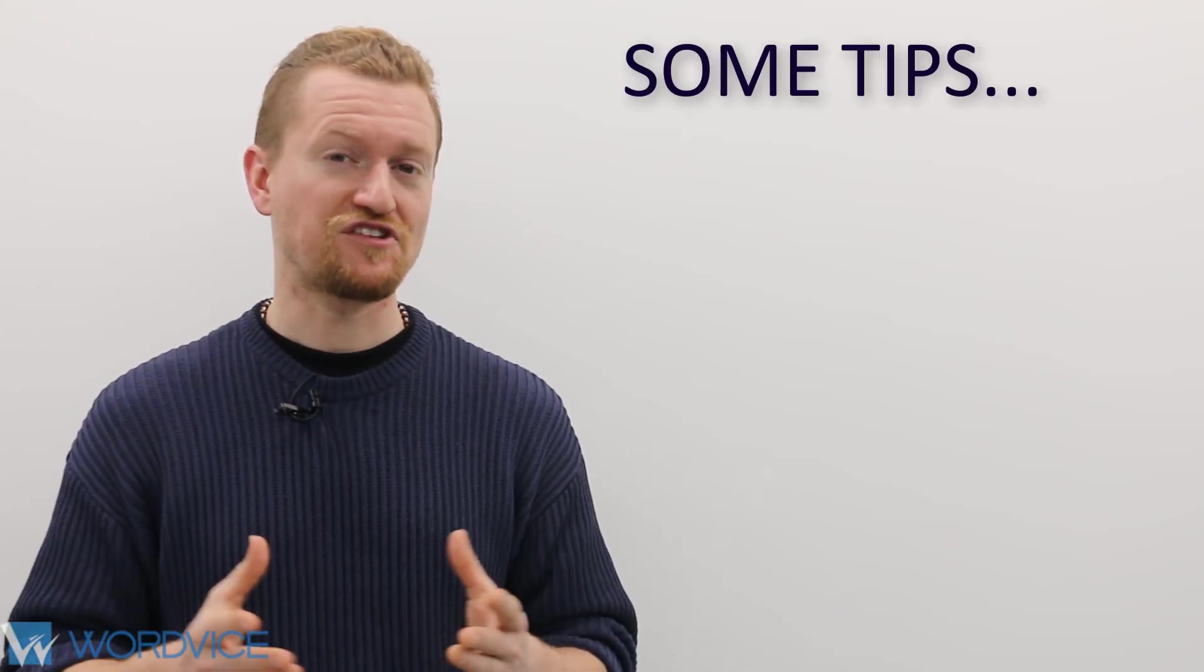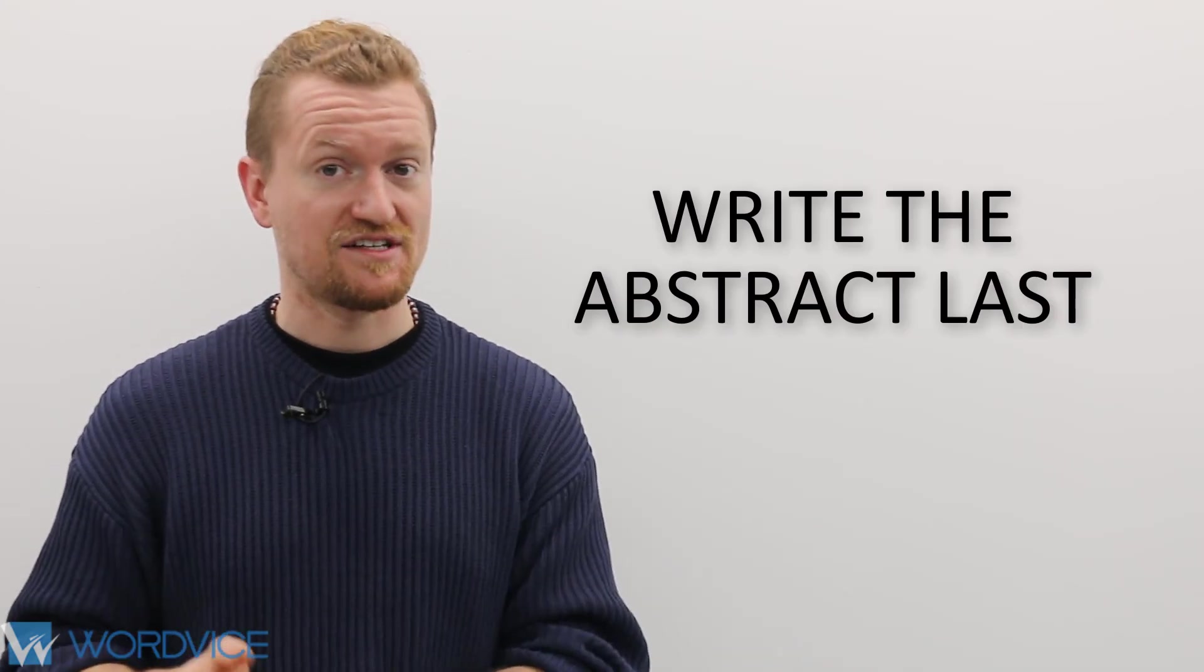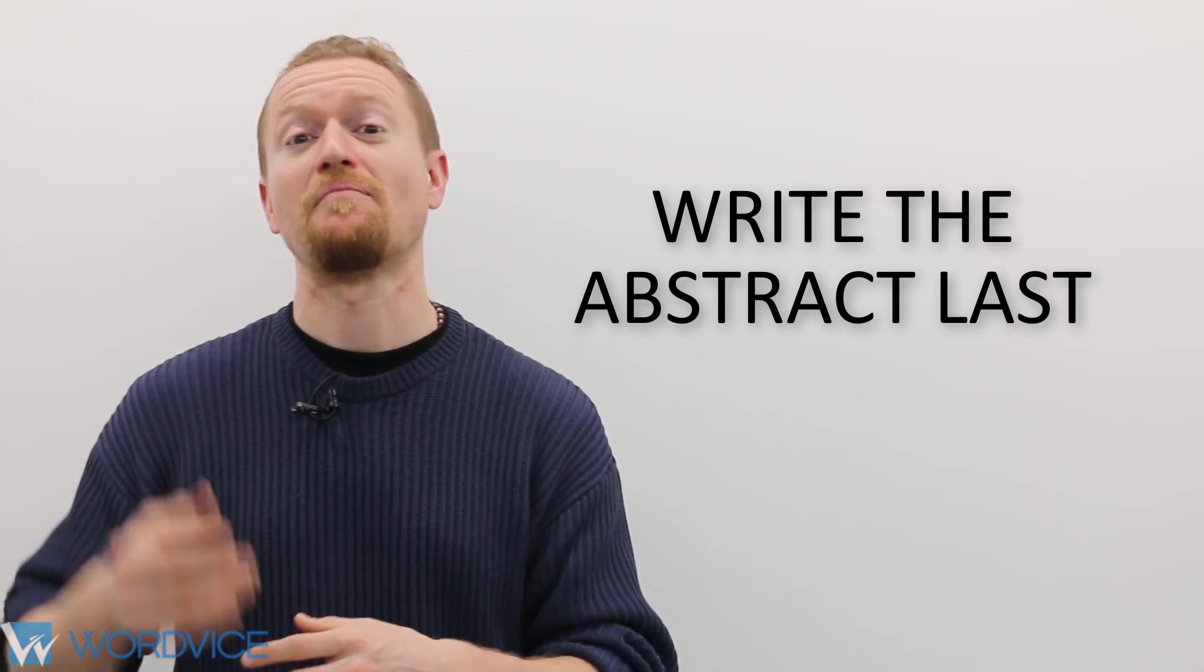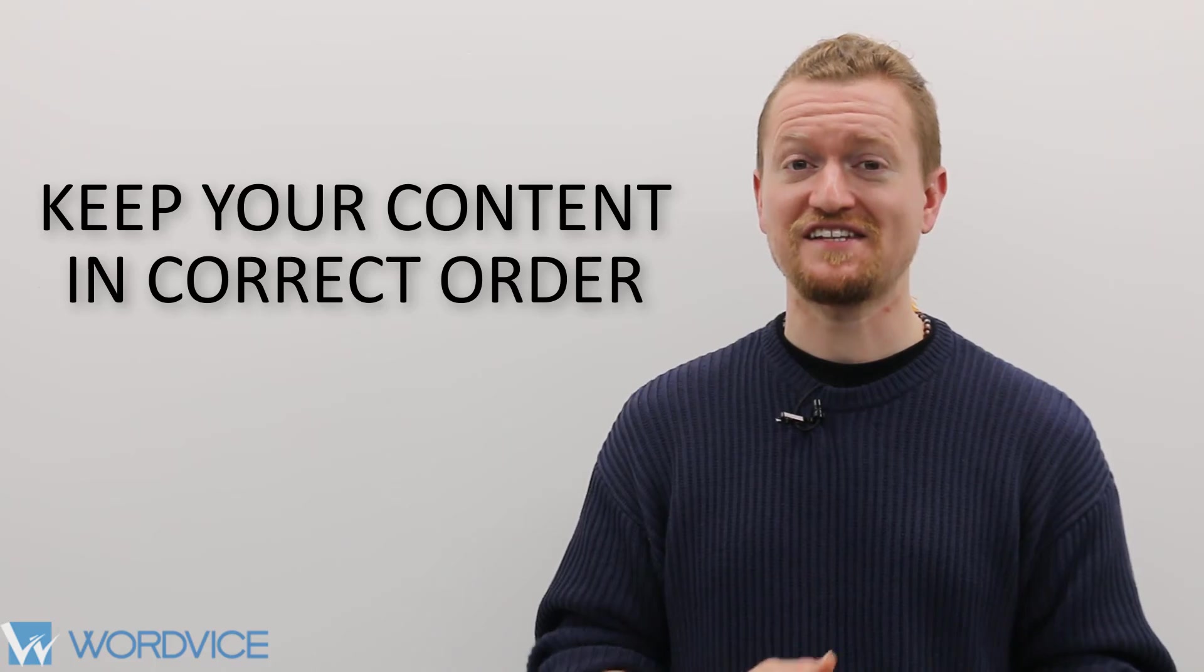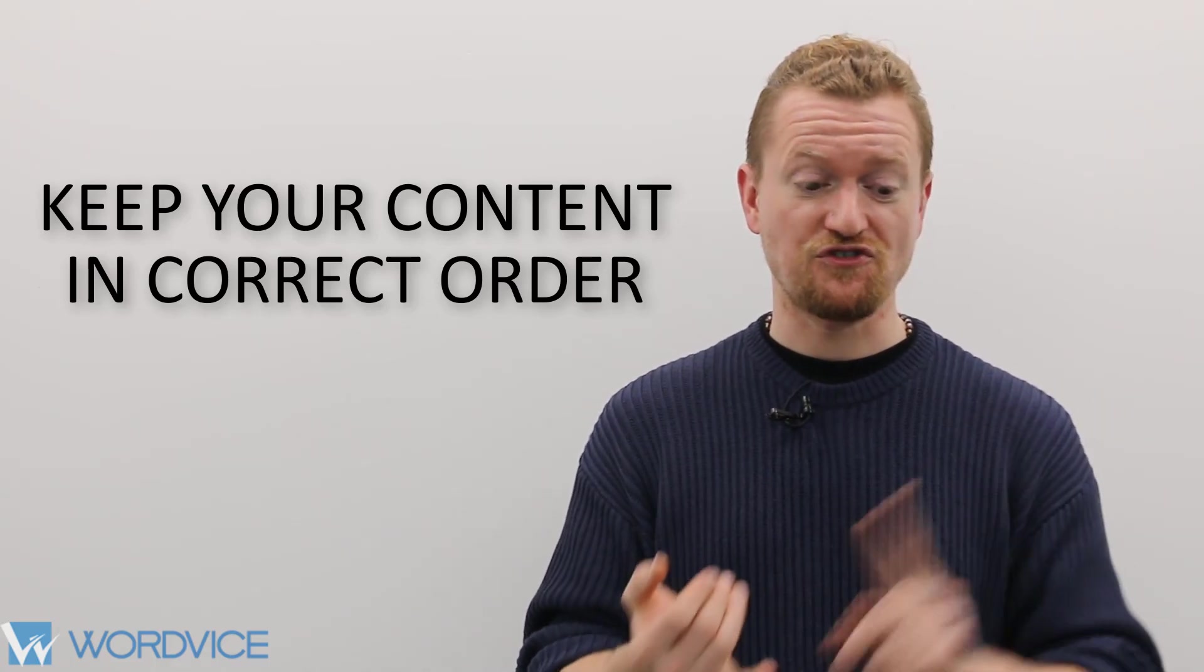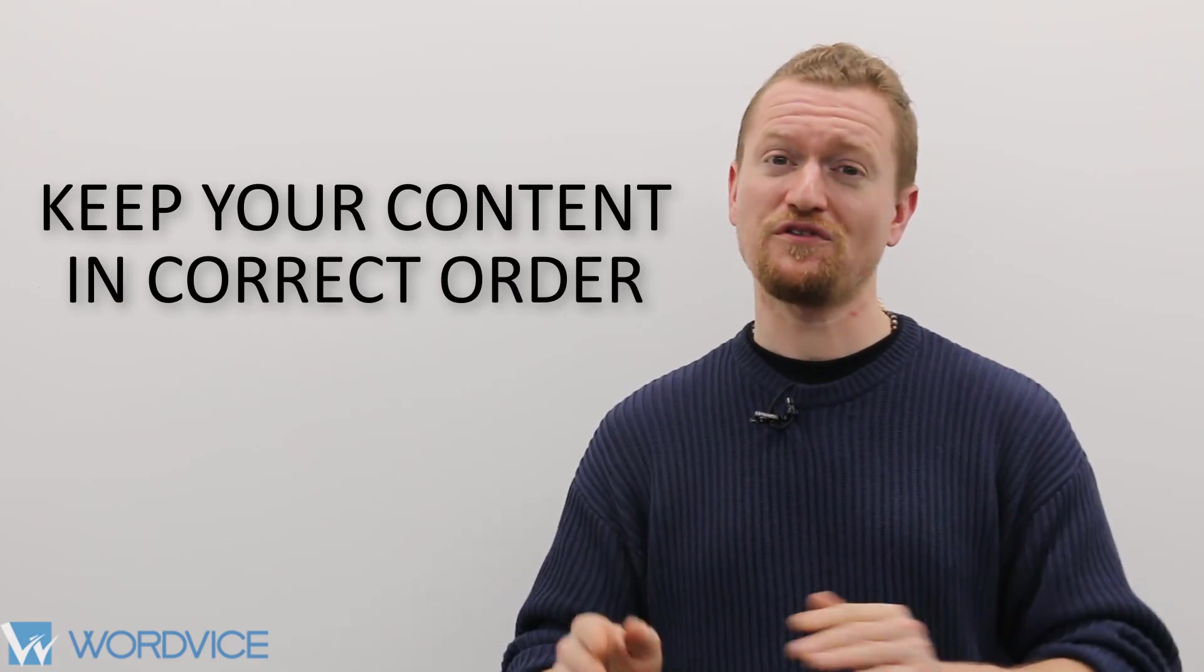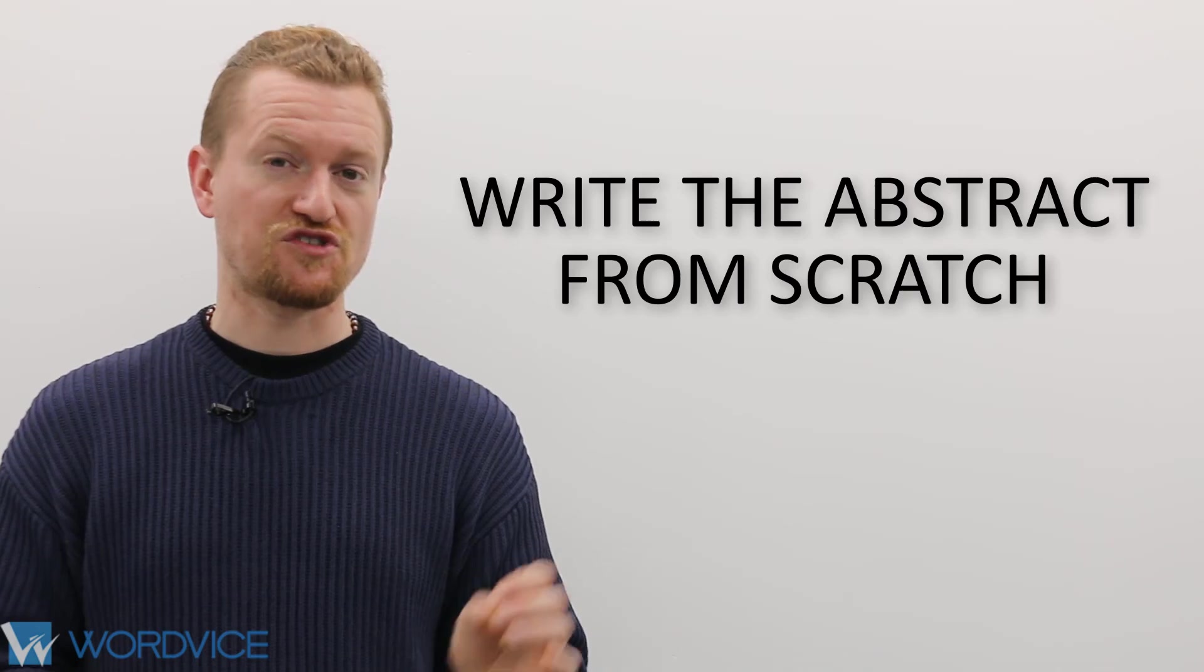Here's some general tips to keep in mind when writing your abstract. First, write the abstract last. Writing your abstract last will ensure that the information in both the body of your paper and the abstract are consistent. Always keep your content in order. Start with the introduction and finish with the conclusion. If you're out of order, the reader might get confused and skip to the next abstract. Write the abstract from scratch.